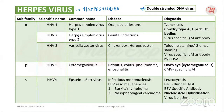Herpes simplex virus type 2 is basically associated with genital infections — genital herpes. The sites can be the penis or urethra, cervix, vulva, vagina, and it can also cause neonatal herpes as well as aseptic meningitis.